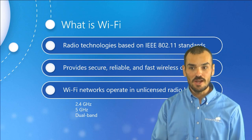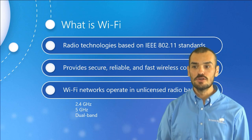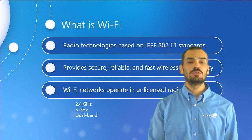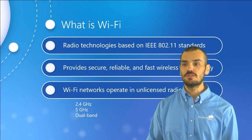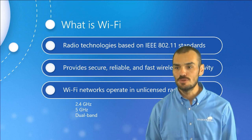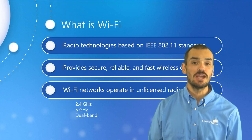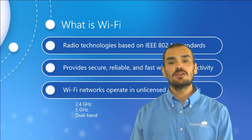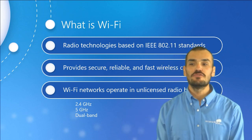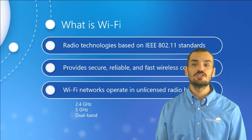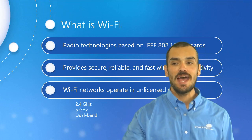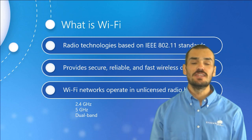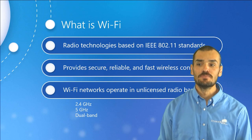The 802.11 standards are simply the designated family of standards specifying the protocols for implementing wireless local area networks. Others would be like 802.3 for Ethernet and 802.15 for wireless personal area networks, along with a half dozen or so other ones out there. These standards essentially define the necessary elements to provide secure, reliable, and fast wireless connectivity among devices, the internet, and wired networks.